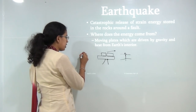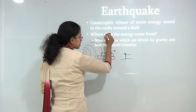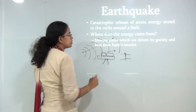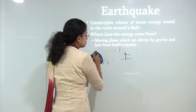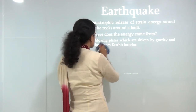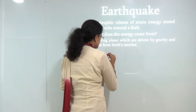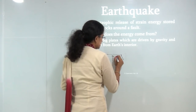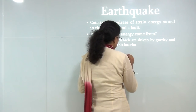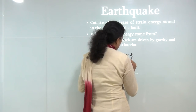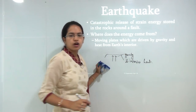You have a point which is the centre of the earthquake, and the waves move in a fashion such that the impact of the earthquake decreases as we move away from the centre. This energy comes from the interior of the earth, which has huge amounts of energy in the form of heat. That energy, dissipated towards the surface driven by gravity and the interior heat of the earth, leads to the phenomenon of earthquake.